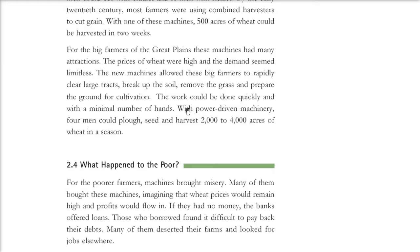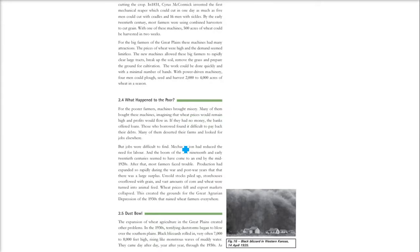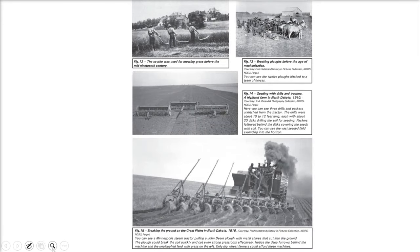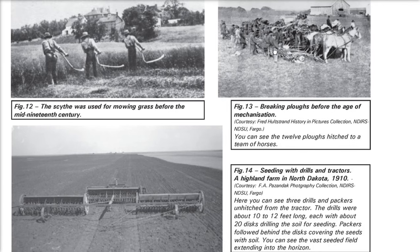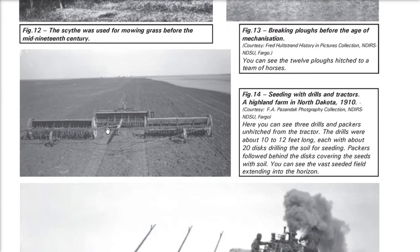This was the level of technology being used, and because of it, labor was no longer required in large numbers. This shows what happened to the poor. Let me also describe the pictorial sequence: first the era of sickles and hand tools, then the breaking plows before mechanization using many horses, and then seeding with drills and tractors — as shown in a highland farm in North Dakota, 1910.